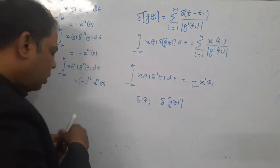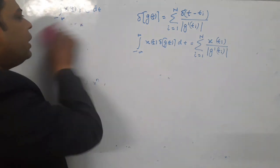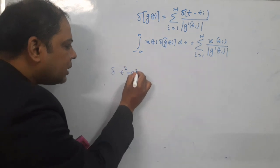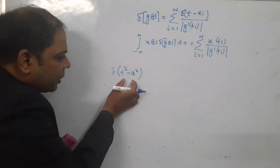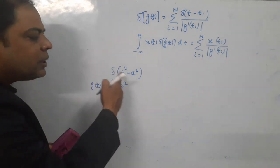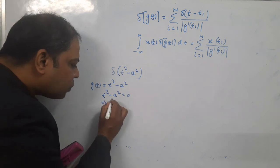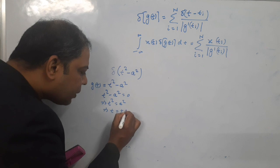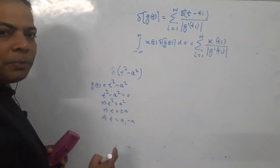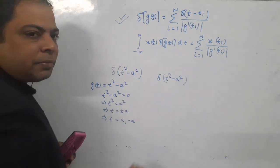Suppose you are given δ(t² − a²). Here g(t) = t² − a², which is in the form δ(g(t)). First find the roots of g(t): t² − a² = 0, which implies t² = a², which implies t = ±a. So t equals a and minus a — there are two roots.